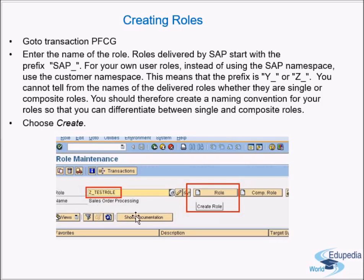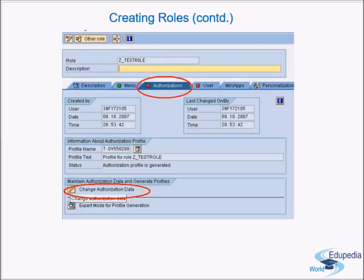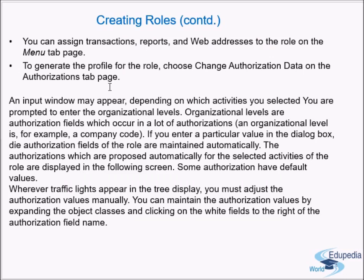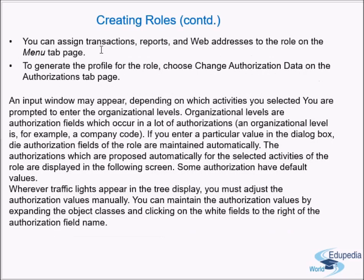Here I am creating a single role, so I give it a name like C underscore test role and click Create Role. On the Menu tab page, you can assign transactions, reports, and web addresses to the role. This is the user menu the user sees once logged on, allowing navigation to any transaction or report without remembering all transaction codes.